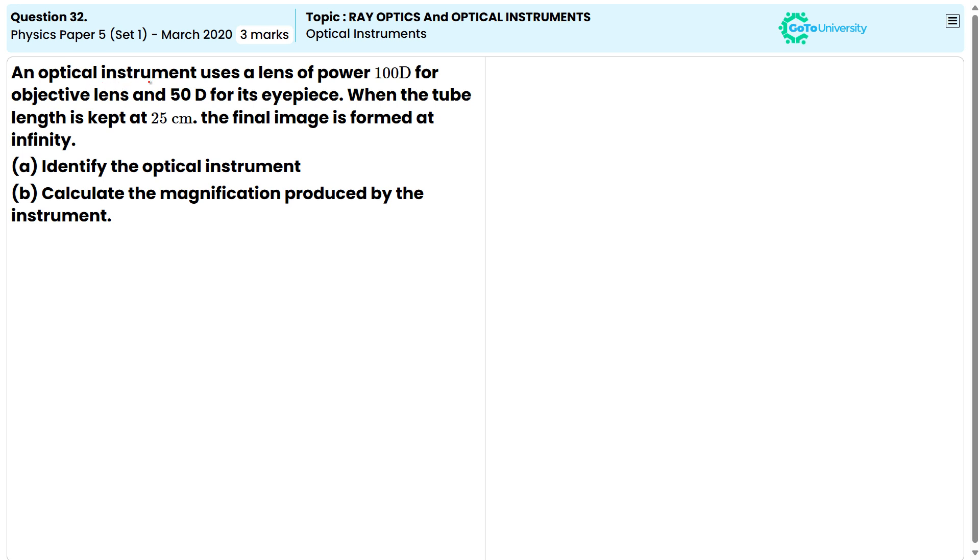Here, the question is, an optical instrument uses a lens of power 100D for objective lens and 50D for its eyepiece. When the tube length is kept at 25cm, the final image is formed at infinity.